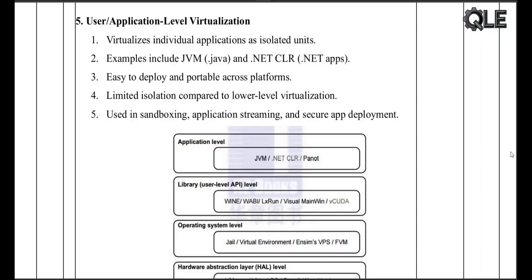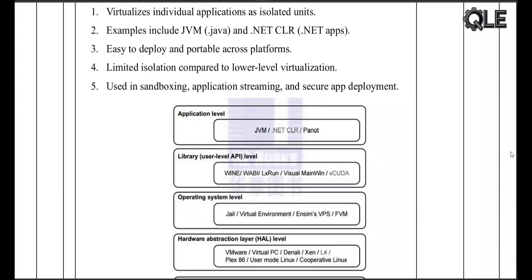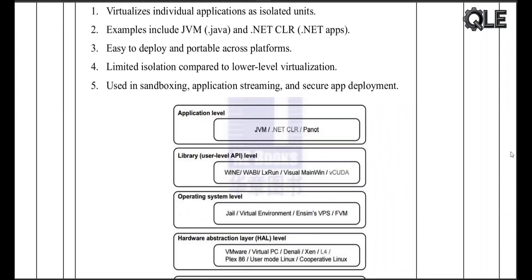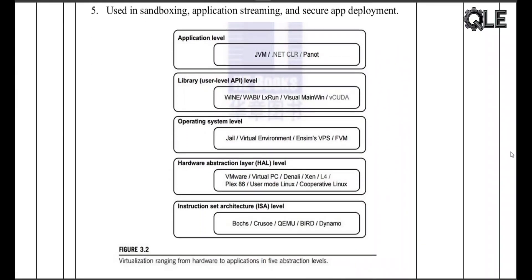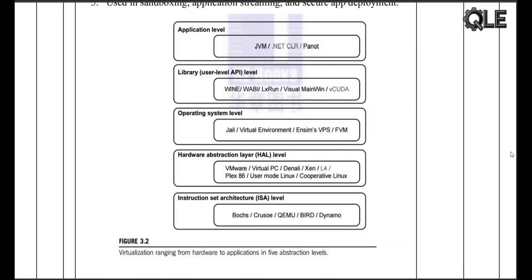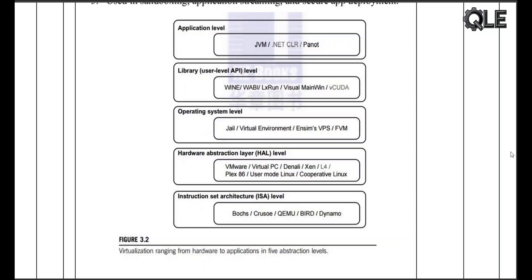Let's quickly recap all five levels: ISA level emulates CPU architecture; hardware level is full virtualization using a hypervisor; OS level uses containers sharing one kernel; library level virtualizes APIs for apps; and user application level provides sandboxed, portable apps like Java or .NET.